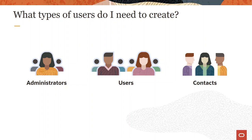You could assign those particular role permissions. For example, if the user is simply to be a contact for notifications, you would limit their role assignments and, of course, limit access to changing anything on the system, but still permit various communications.